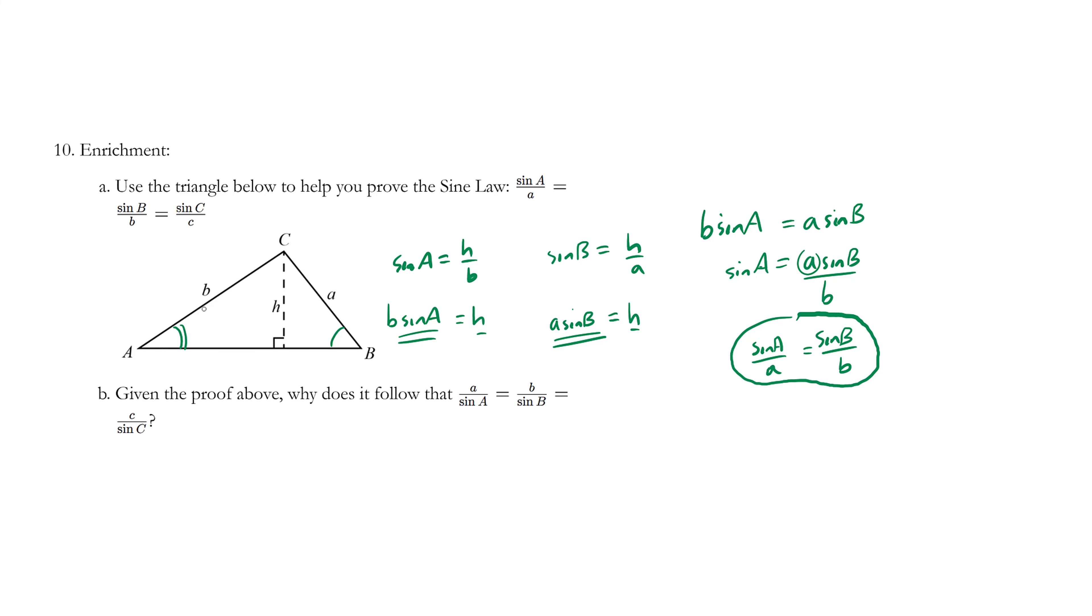And it helps us solve the angles and size of a triangle that's not even a right triangle. Notice how we drew a perpendicular line between A and B, and that helped us prove sine A over A equals sine B over B.